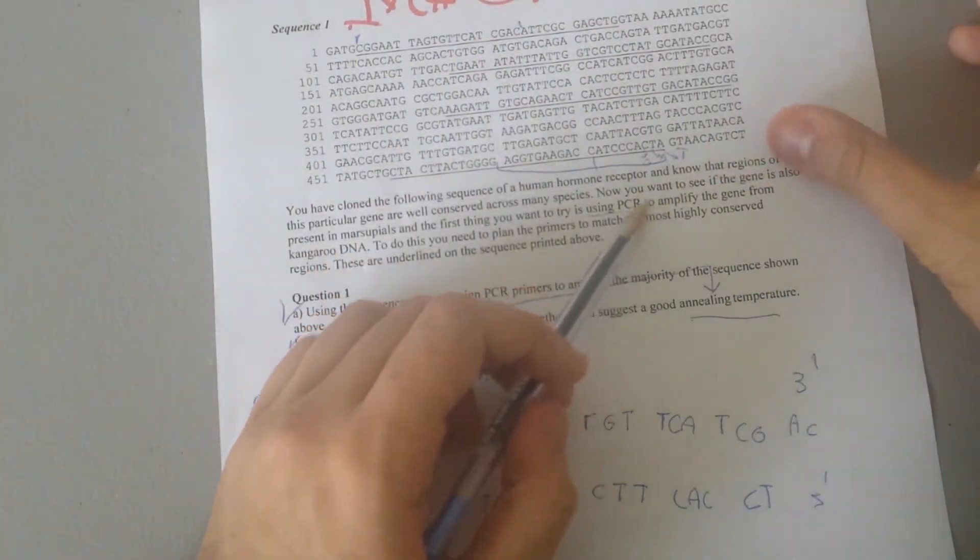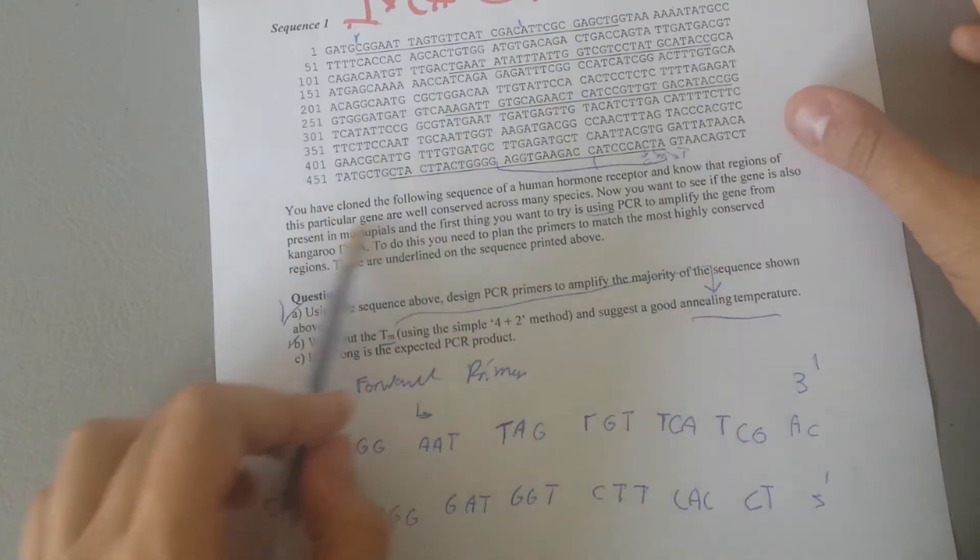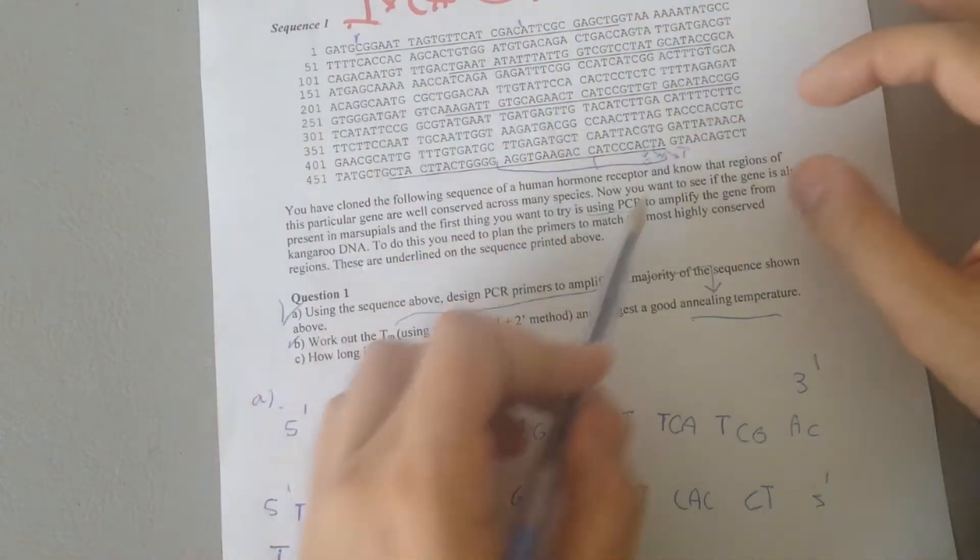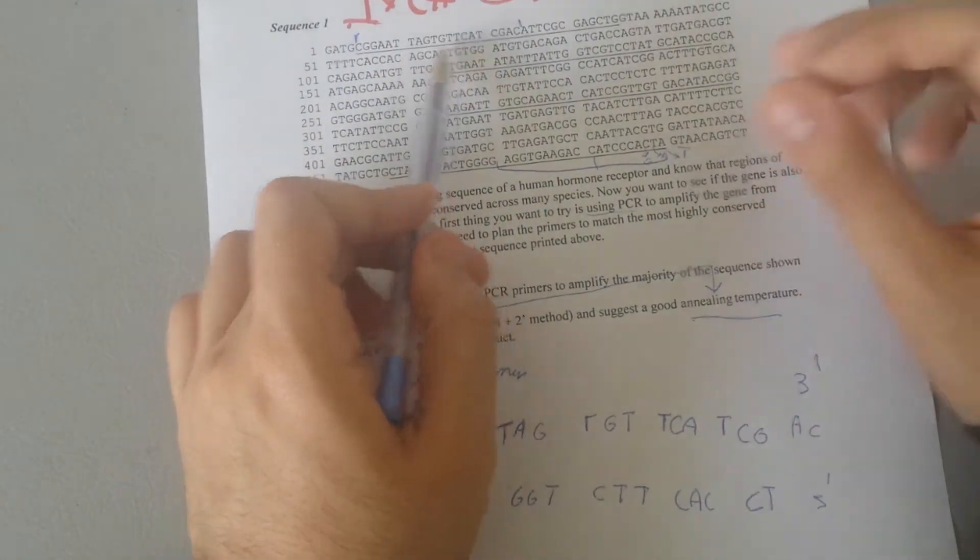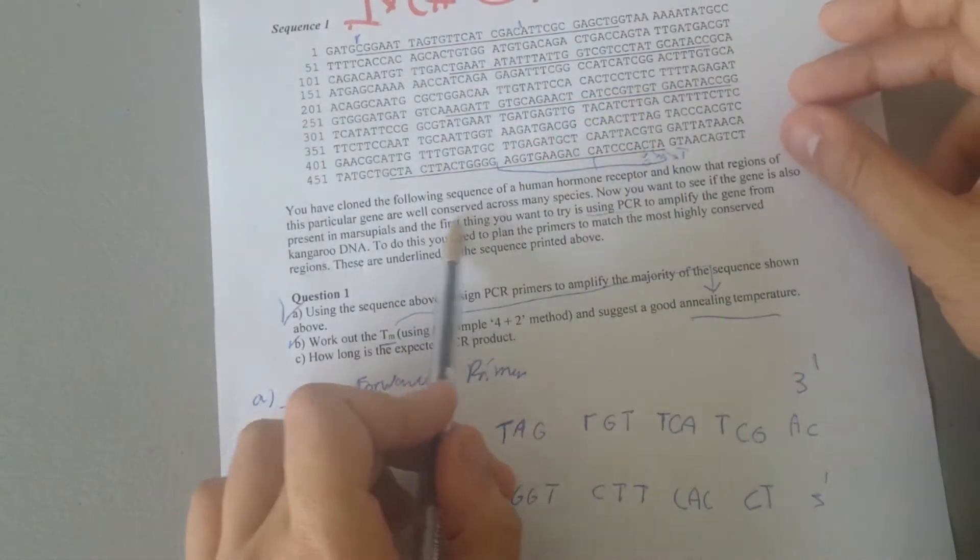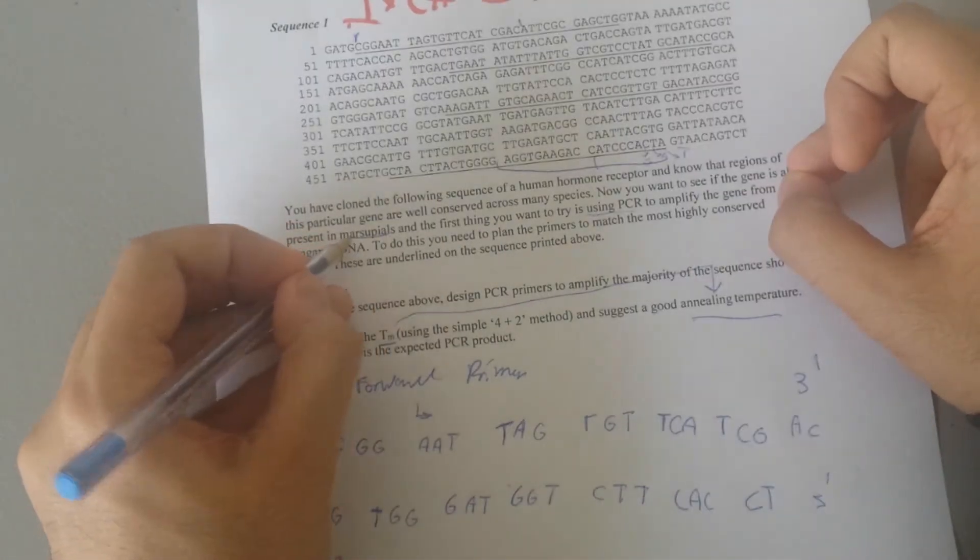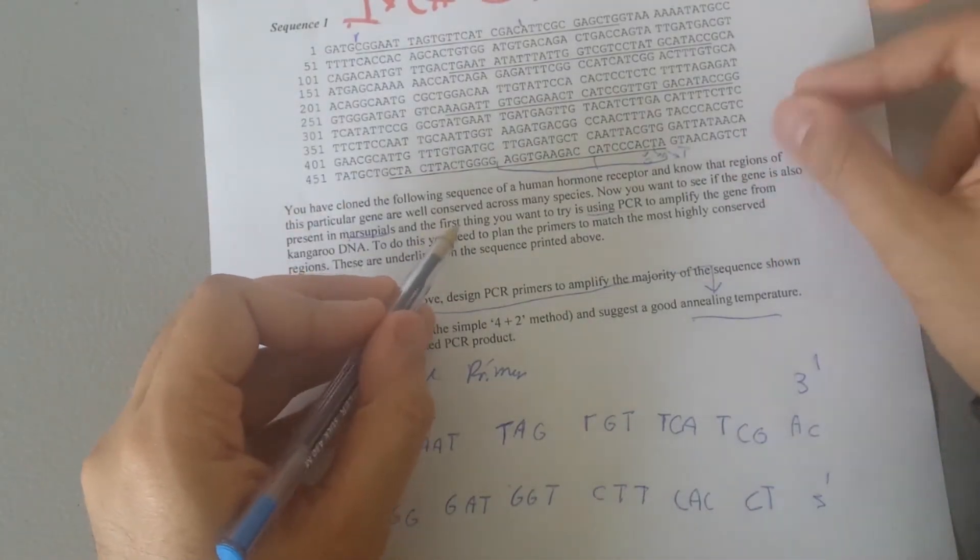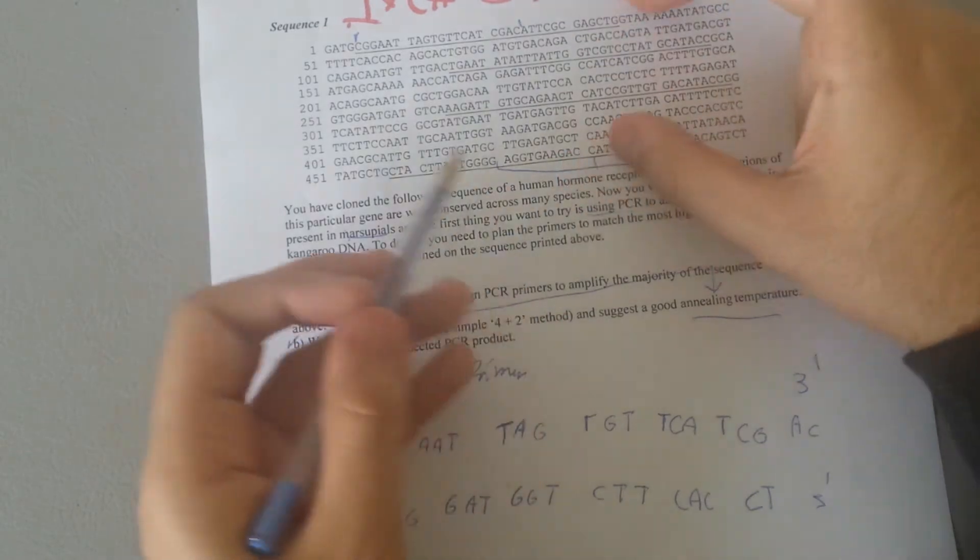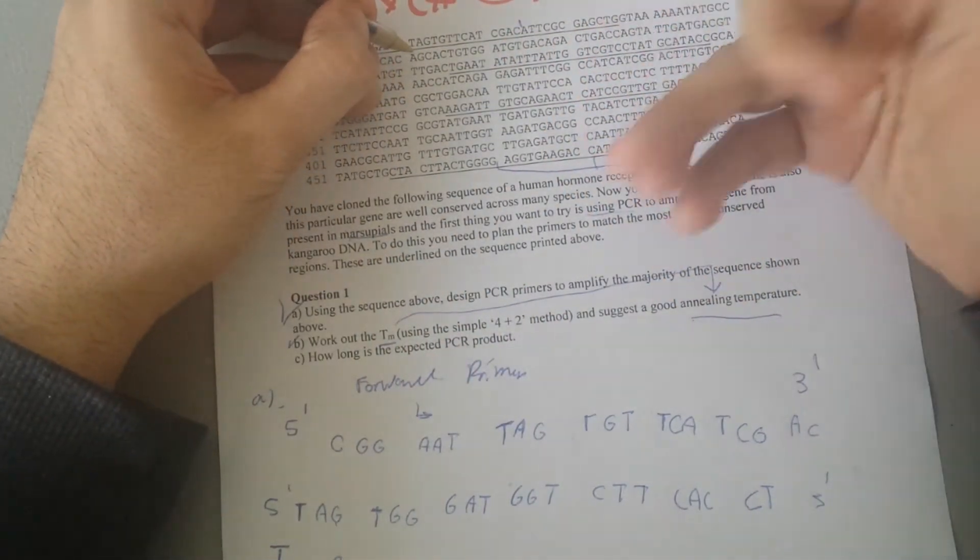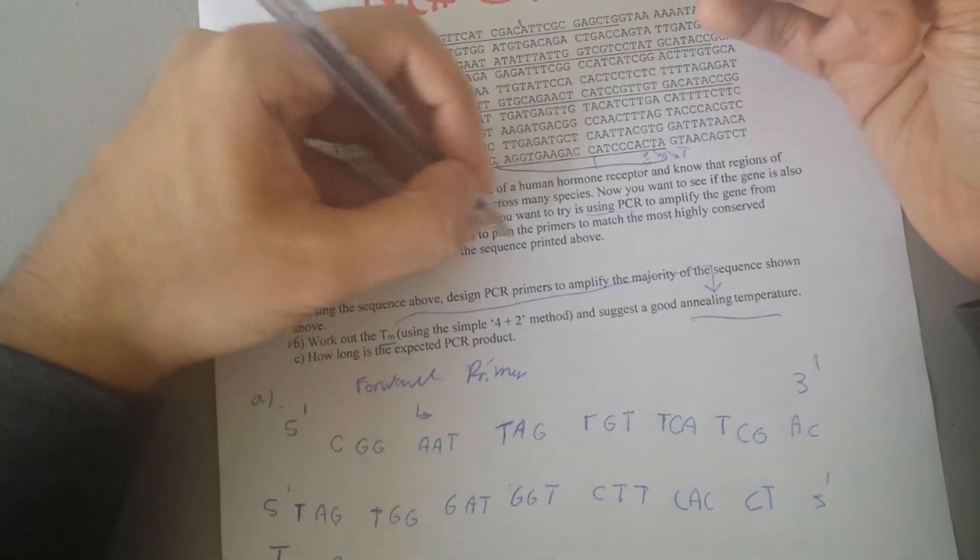Let me quickly tell you what this question is asking. We are told that we have this particular gene that contains these specific regions that are conserved across many species. You want to see if the gene is also present in this specific animal known as marsupial. The first thing you want to do is amplify the gene that contains this R-line sequence using the PCR.